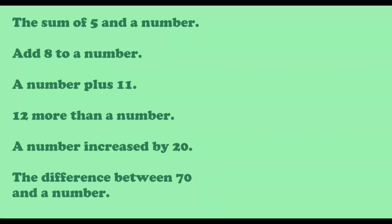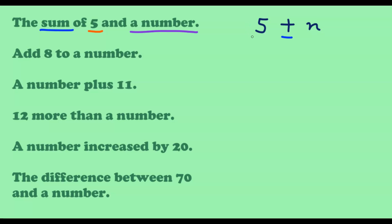Now let us have a look at a few problems to understand how we can translate words into algebraic expressions. First, we have 'the sum of five and a number.' We have the word sum, so we're going to need an addition sign. We don't know what that number is, so we can use a variable — let's choose the letter n. So we have translated the words into the algebraic expression five plus n.